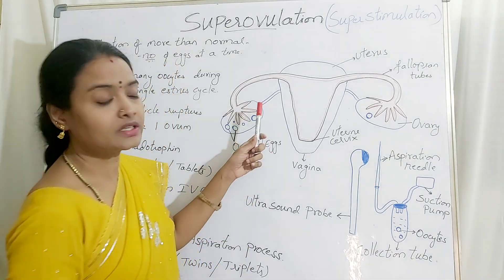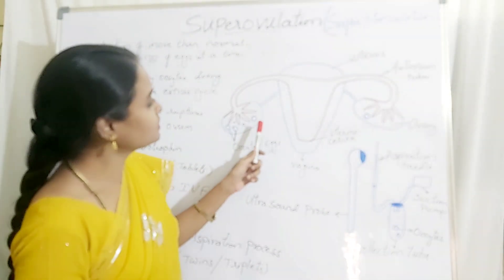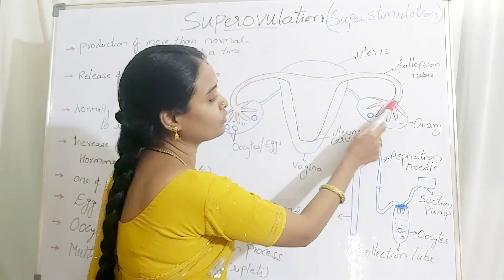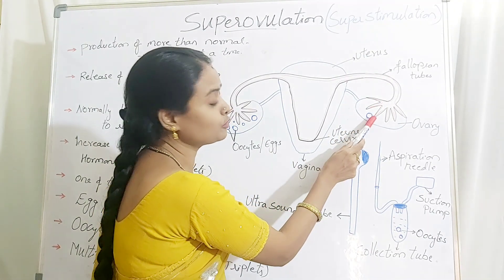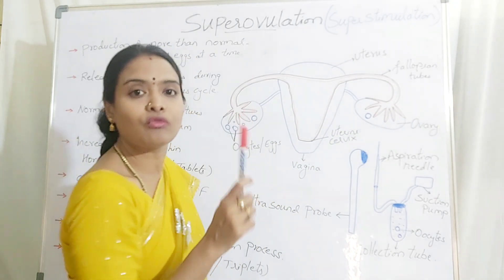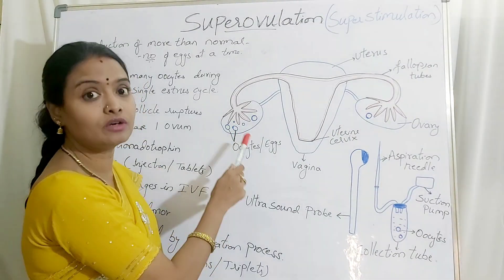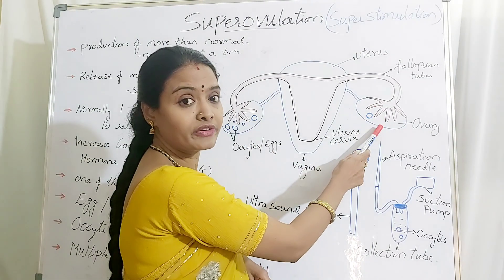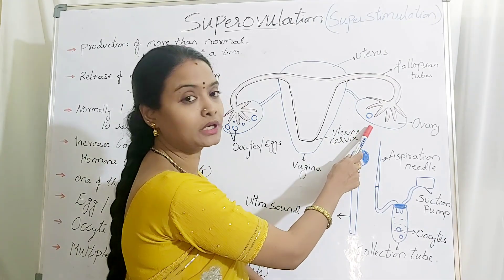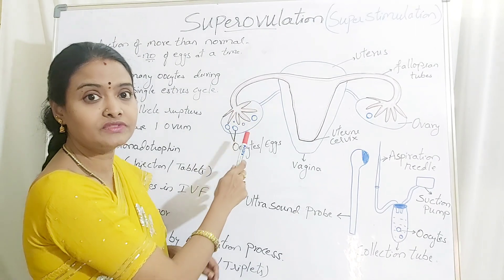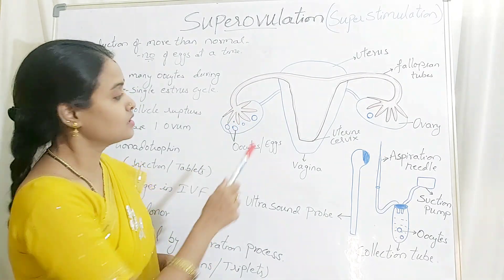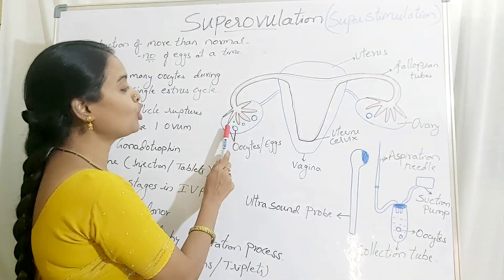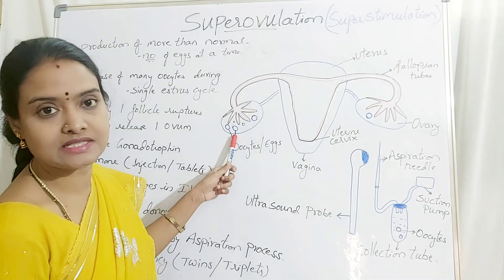If you observe the animal reproductive system, you can see the fallopian tubes and the ovary with its follicles. Each follicle per estrous cycle will produce only one oocyte — that is the normal process without any super ovulation. Whereas when super ovulation treatment is started, the follicle will result in production of more number of oocytes or egg cells.